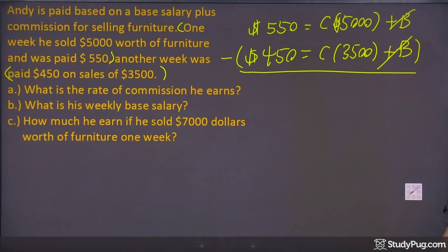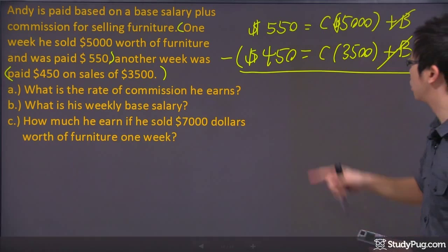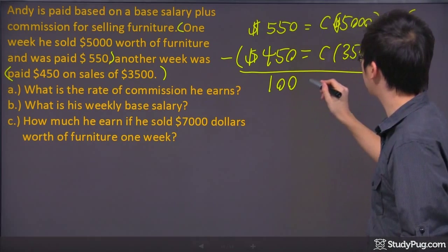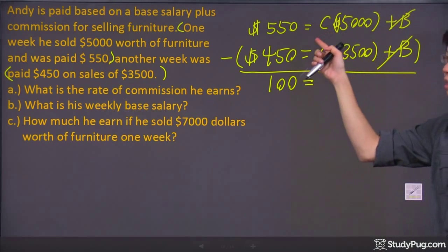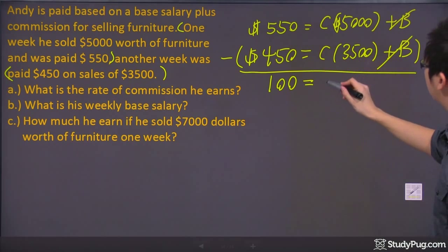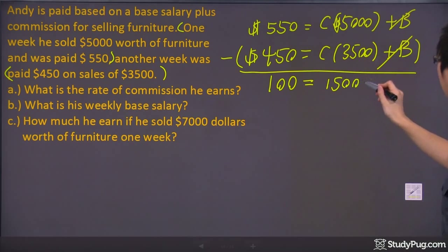Now I can just focus in on my commission rate, which is the C right there. Let's go ahead and figure out the math right here. We've got 550 minus 450, it's just 100. And 5000C minus 3500C is actually 1500C right there.